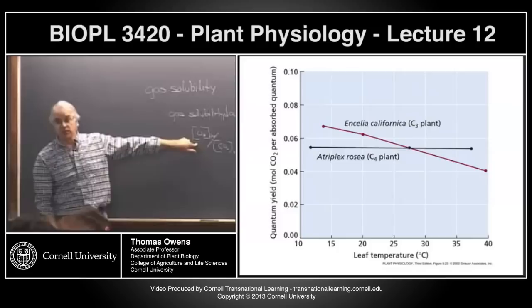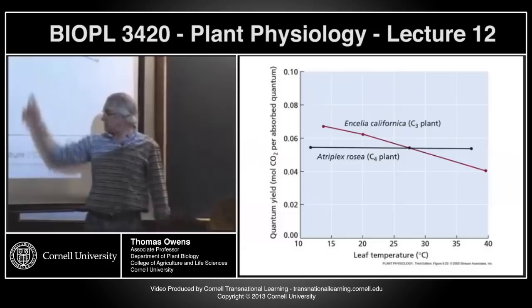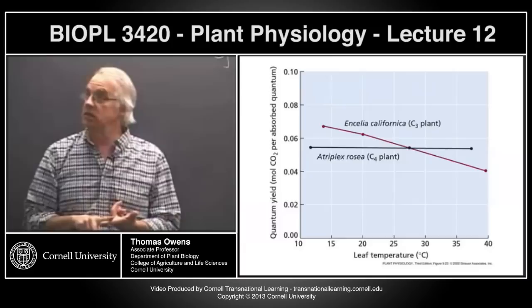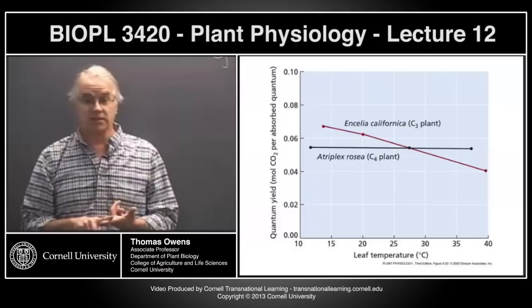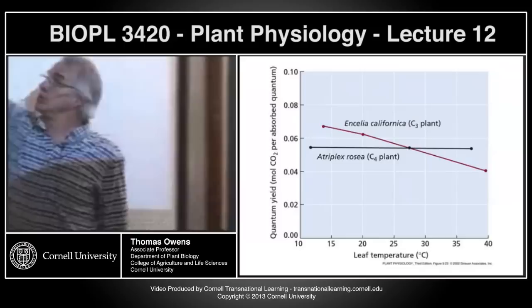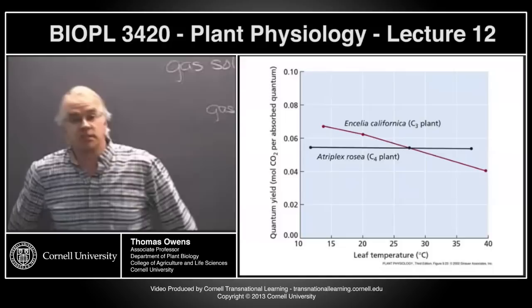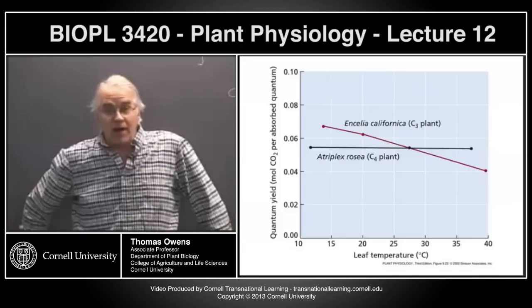There's an effective compensation point around 25 to 30 degrees. Below that temperature, the photorespiratory losses in C3 plants are less than the extra energy that C4 plants spend for CO2 concentrating mechanisms. So at relatively lower temperatures, C3 plants are more efficient, and at higher temperatures, C4 plants are more efficient. This explains the geographic distribution: C4 plants tend to be more tropical, and C3 plants tend to be more temperate.